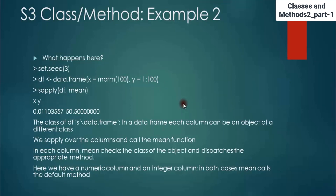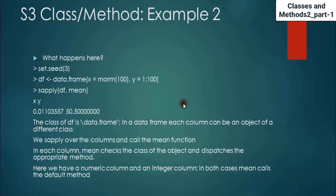Now in this example, set.seed(3), df is a data frame with random numbers 1 to 100 in the X column and 1 to 100 in the Y column. I'm using sapply(df, mean). Here, the class of df is data frame, and each column can be an object of a different class. We sapply over the columns and call the mean function on each column. Mean checks for the class of the object and dispatches the appropriate method. We have a numeric column and an integer column — in both cases mean calls the default method, and we get the mean values.